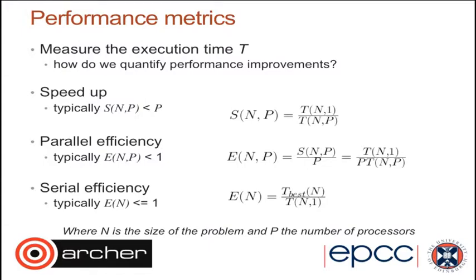The formula for speed-up is T(N,1) — the time it takes to run problem size N on one processor — divided by T(N,P), the time it takes to run the same problem on P processors. In the ideal case, you would expect the speed-up to double if you run on twice as many processors, or triple on three times as many. But typically we see that S is less than P.